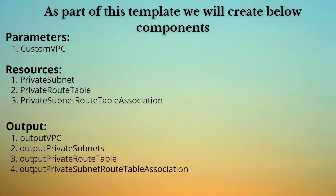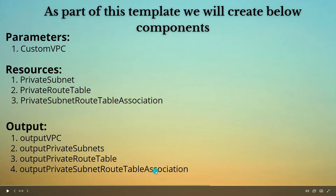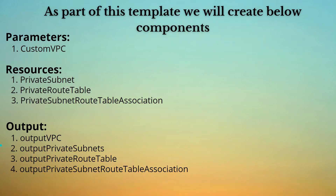Before going ahead with coding the template, let's understand what components we are going to use. We are going to create one parameter — CustomVPC — which is the VPC we already deployed in the previous video. For resources, we are going to create a private subnet, a private route table, and associate the private subnet to the private route table. As part of the output we are going to print the private subnet.